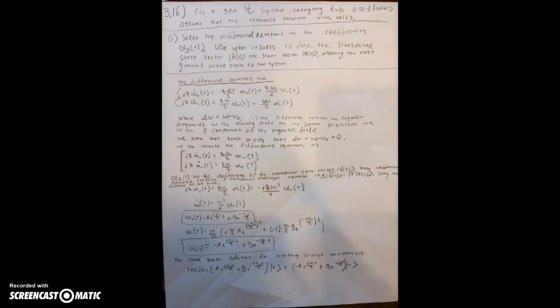Part A asks us to solve the differential equations for the coefficients alpha plus and alpha minus, and use the results to find the transformed state vector and the state vector, assuming the most general initial state of the system.